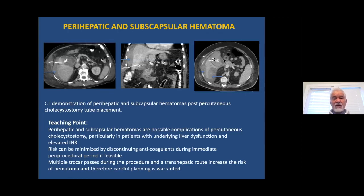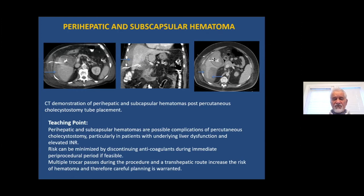Bleeding can occur, and when it occurs after you have checked the INR and platelets, it really is by chance. The only thing you can do is perform the procedure perfectly. There will always be a certain number of patients who will bleed. Here is the liver parenchyma — here is the hematoma, a subcapsular hematoma contained within the liver capsule, causing compression of the liver parenchyma, with blood showing higher density than water. A large subcapsular hematoma can occur. Occasionally there will also be some bleeding into the peritoneal cavity.